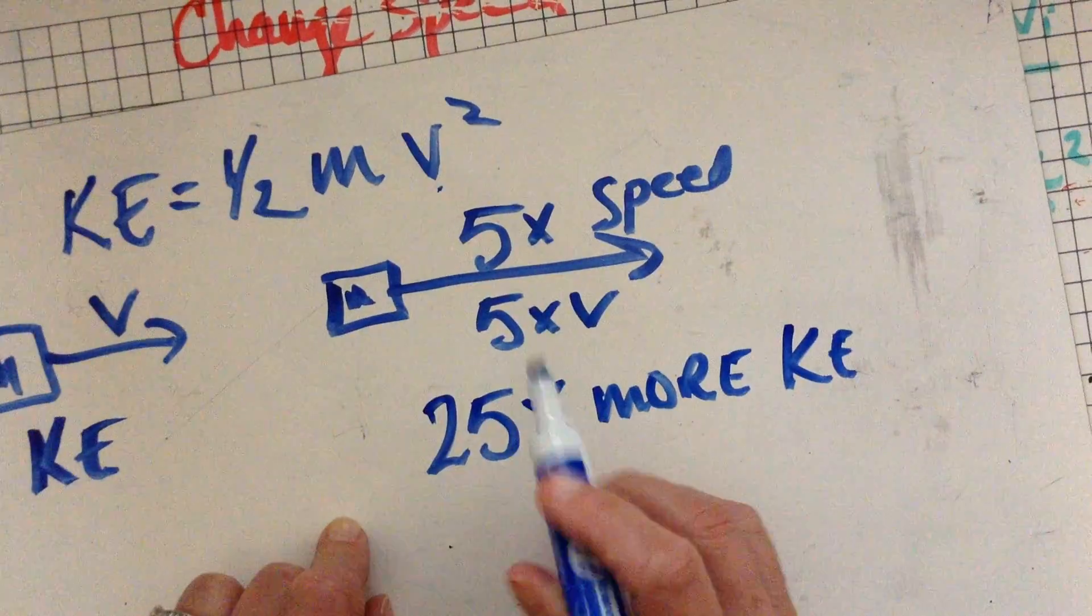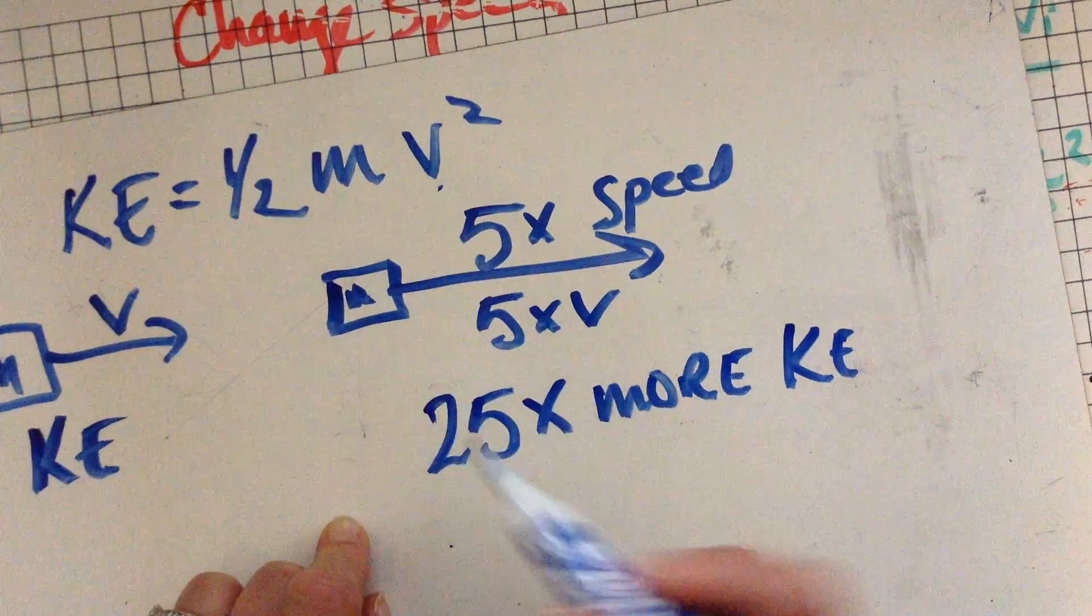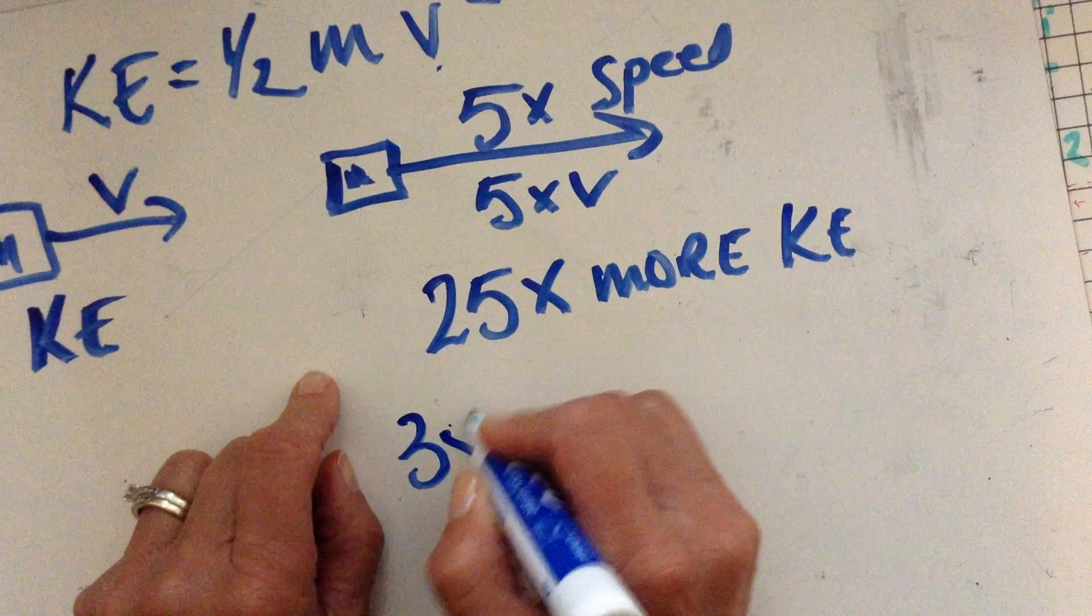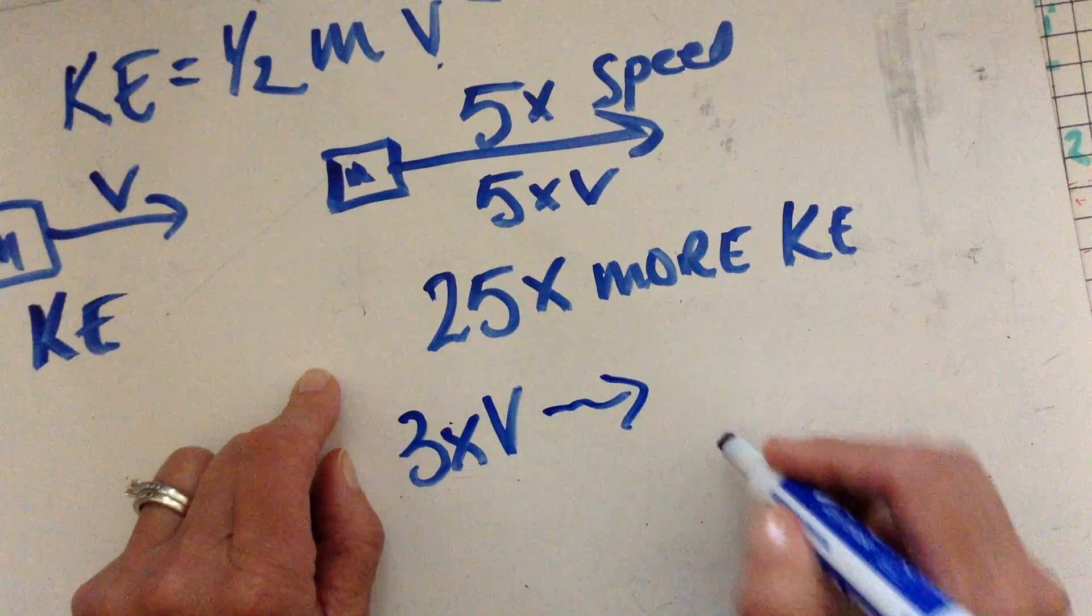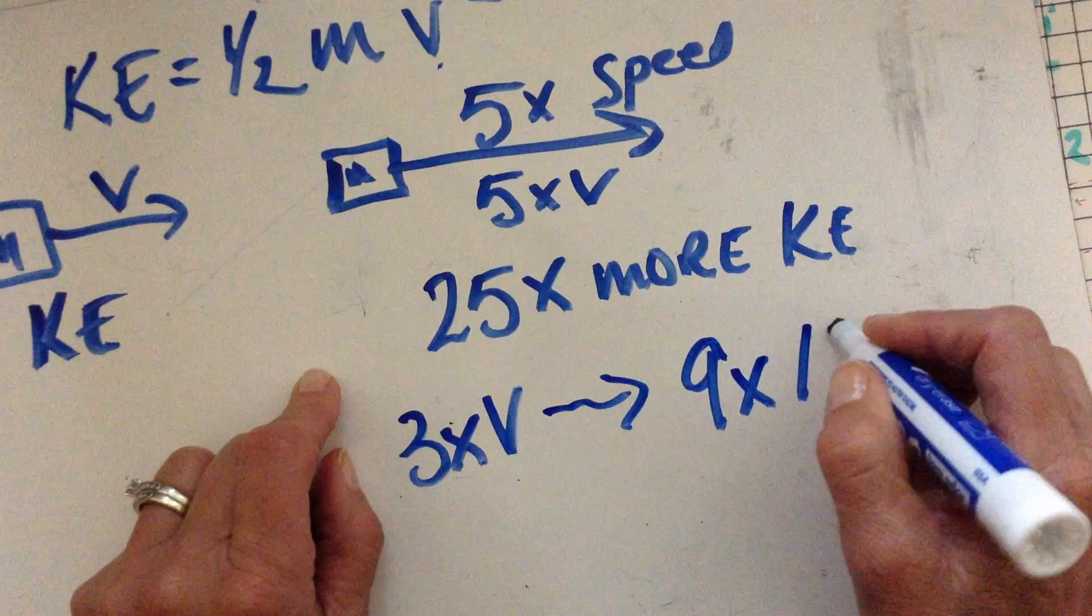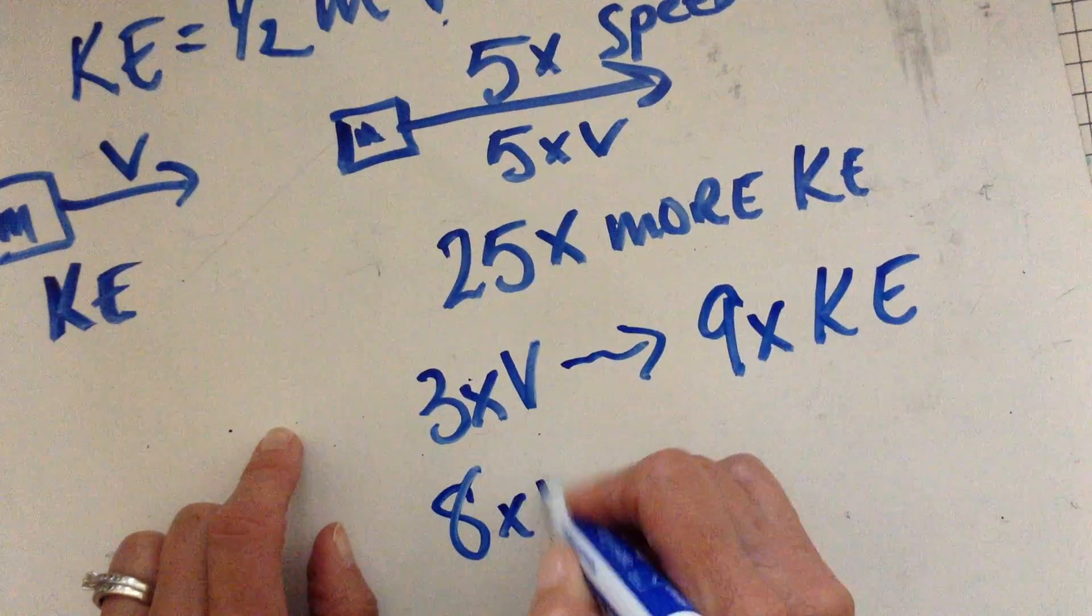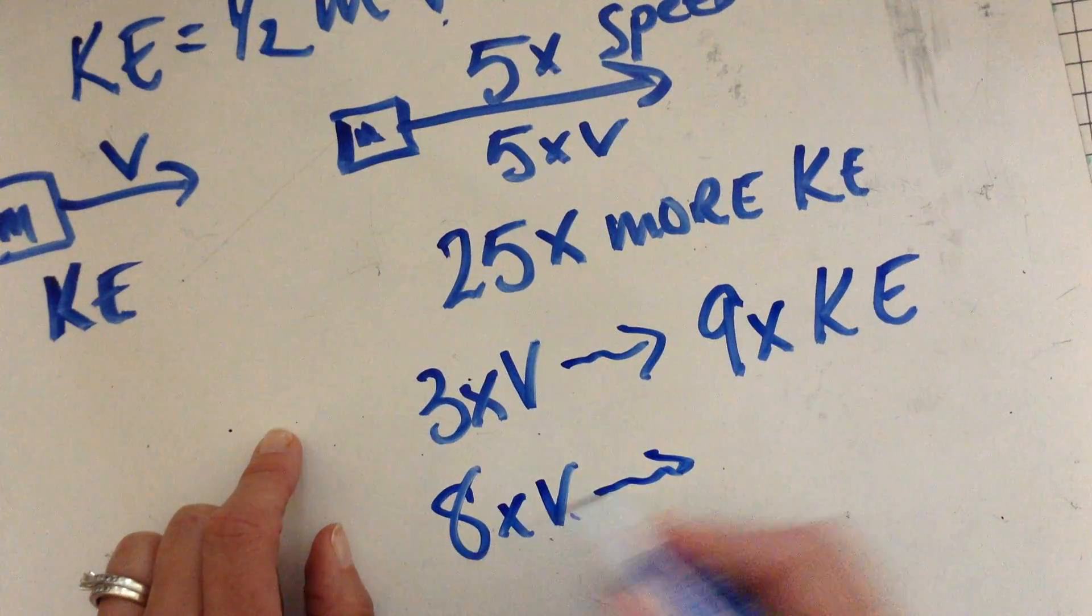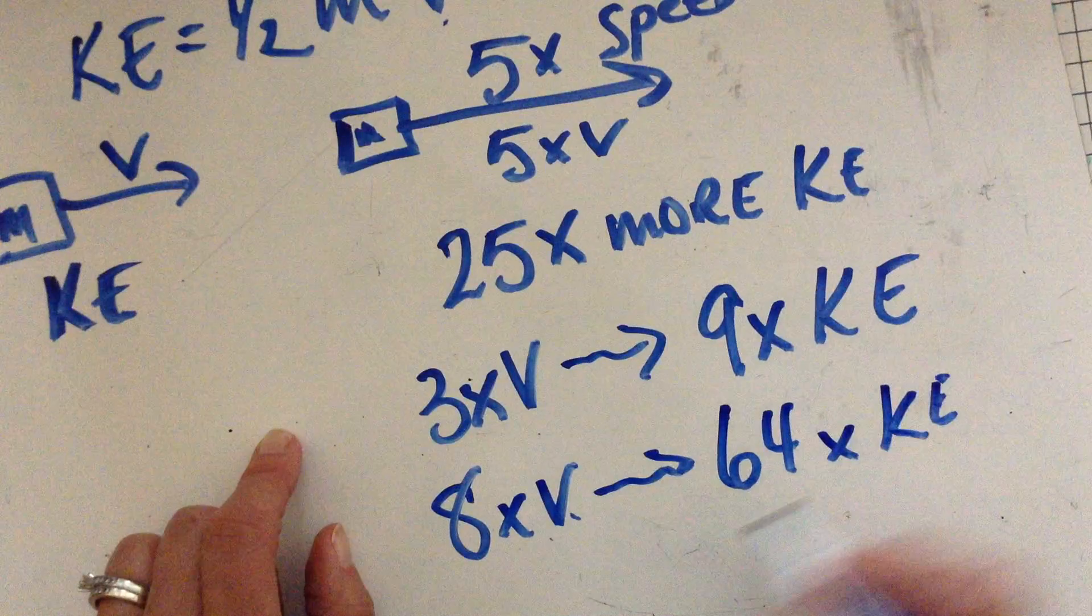More energy is associated with that speed because it's going faster. And it goes as the square of the speed. So if I triple the speed, so three times the velocity, what's going to be the result? I'm going to have nine times more kinetic energy. What if I do eight times the speed? What does that result in? Eight squared, you got it, 64 times more kinetic energy.